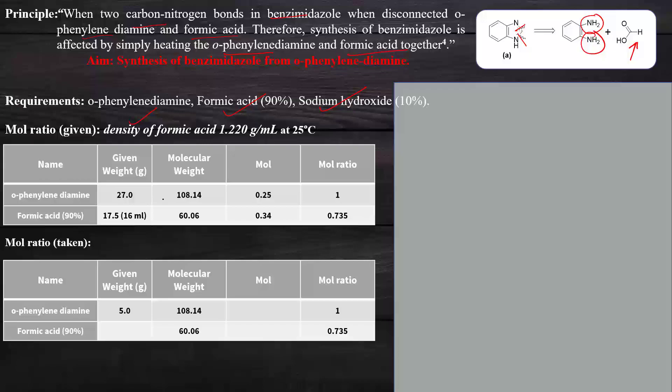Now we will take a look at the mole ratio first. Mole ratio is when you divide the given weight by molecular weight to get moles. Here, given weight is 27 grams, molecular weight is 108 grams, so we get 0.25 moles. For formic acid, given weight is 17.5 grams divided by molecular weight 46.06 grams gives 0.34 moles, which is 0.735 moles with respect to ortho-phenylenediamine.